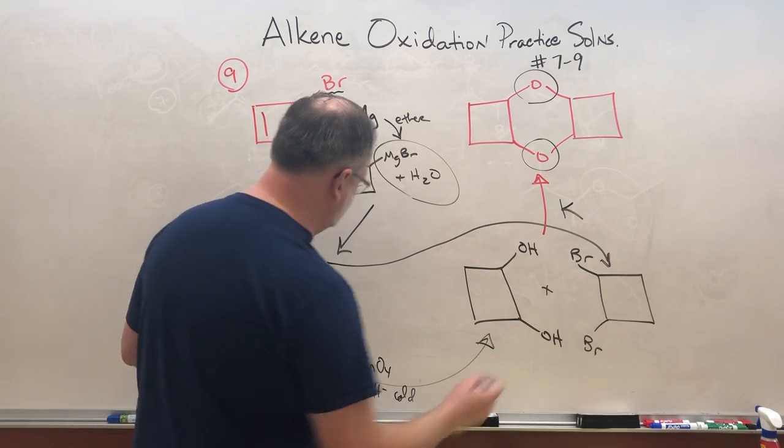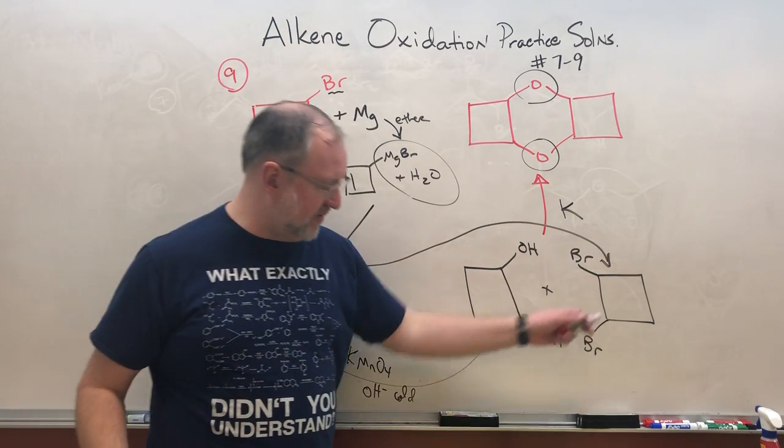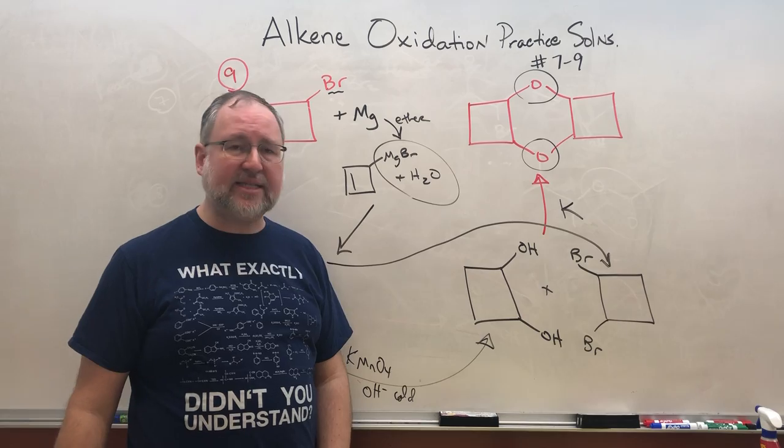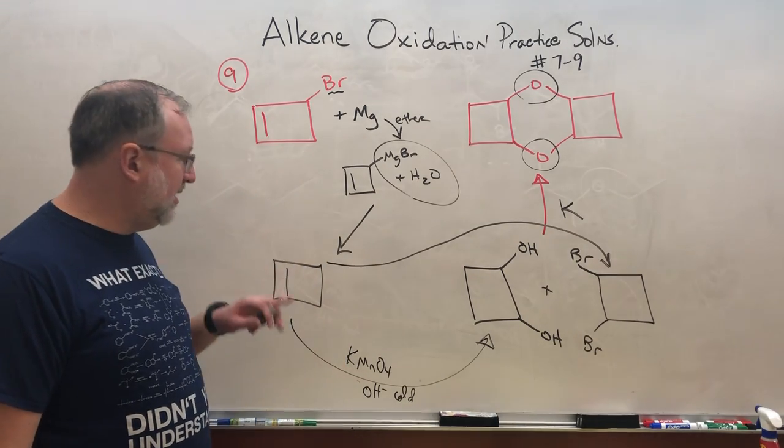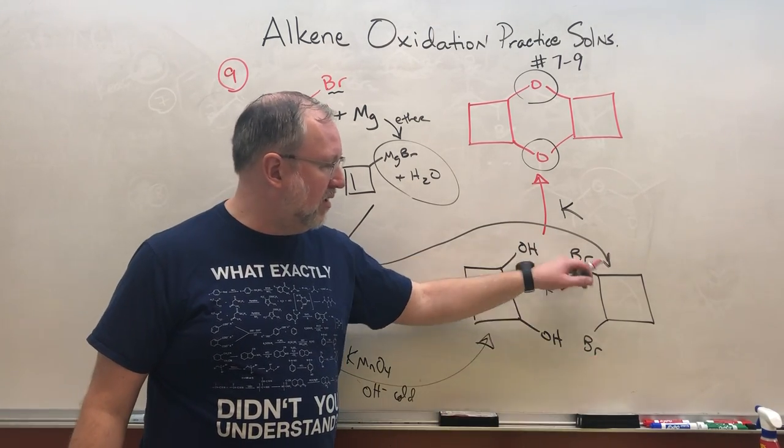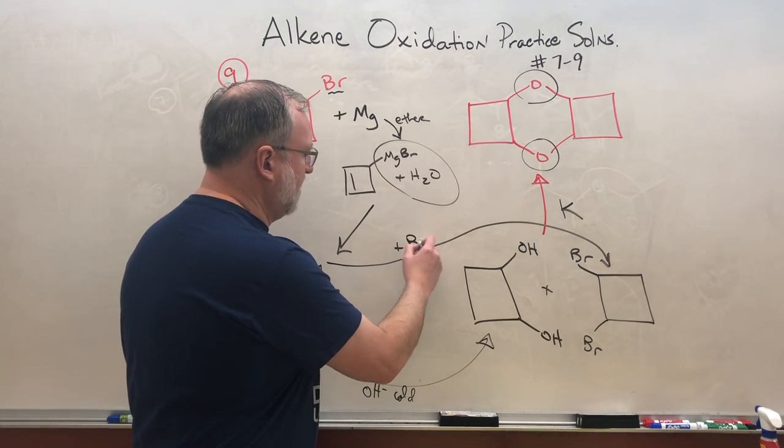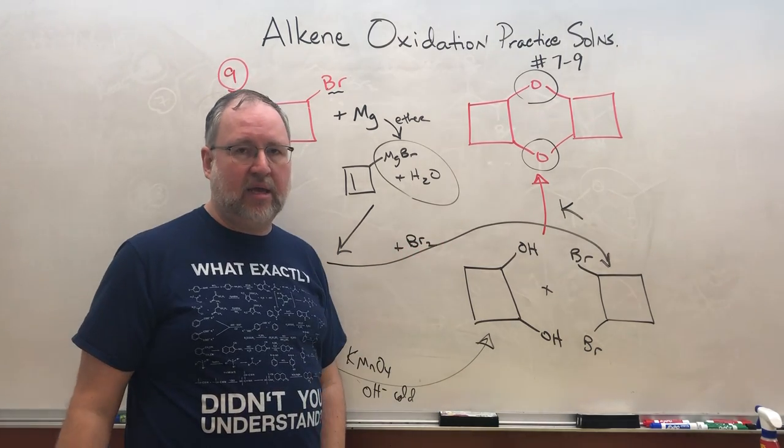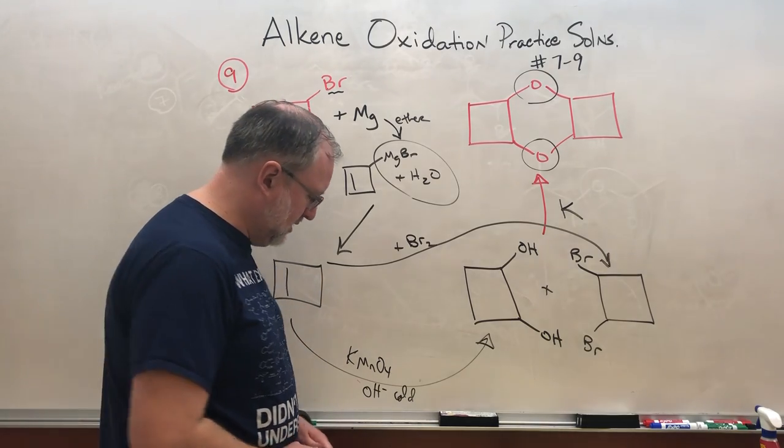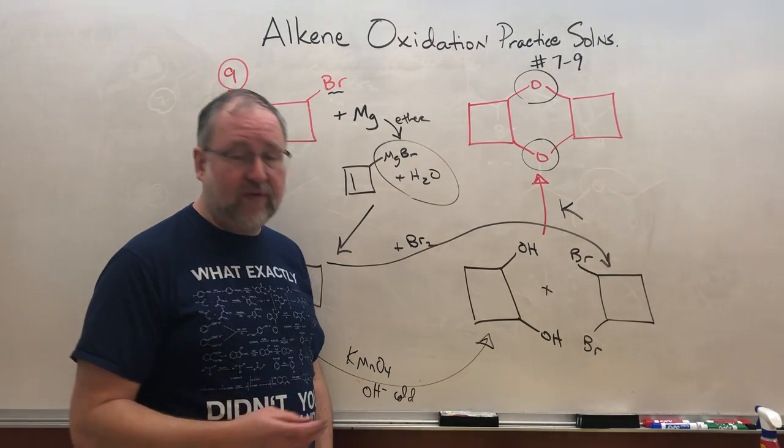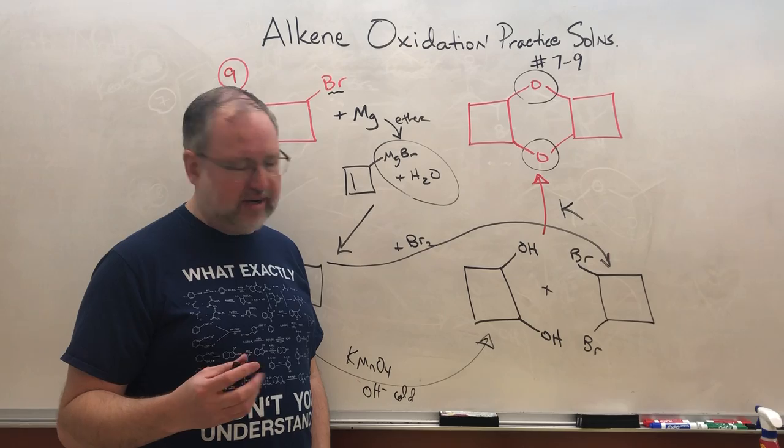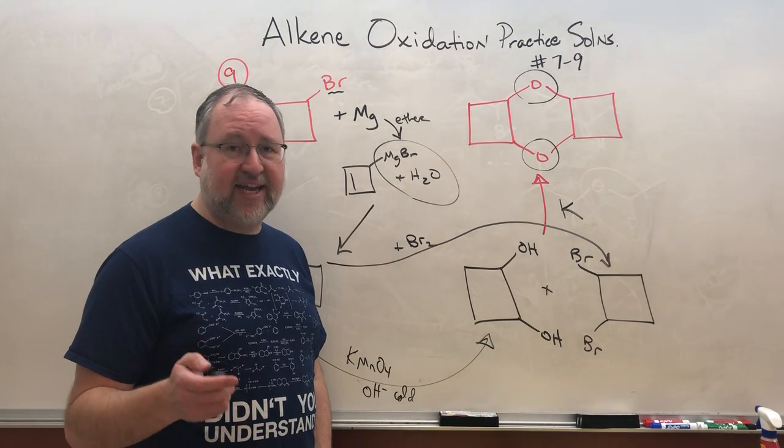And deja vu with number seven. Remember we talked about a problem like this on number seven above. What's the easiest, best way to go from an alkene to a vicinal dibromide? That would just be Markovnikov electrophilic addition, MEA. That one is the halogenation. Anyhow, hopefully this was helpful. I'm going to make another video and talk about 10 and 11.